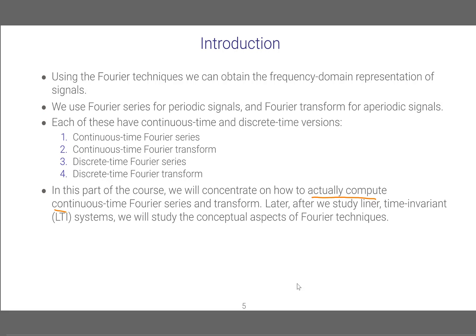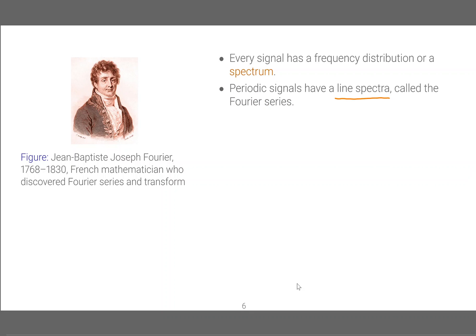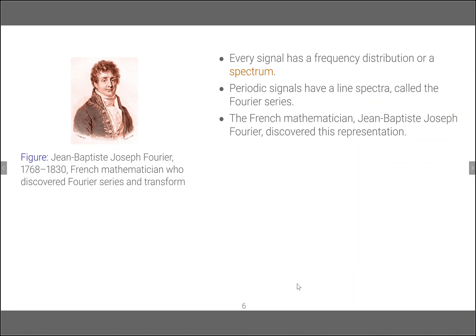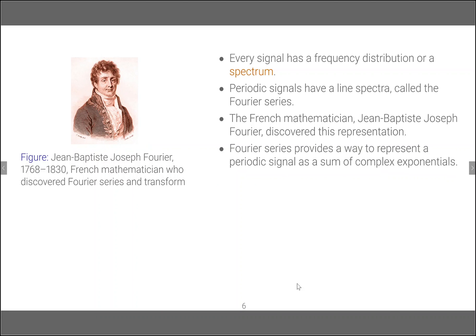We will study how to compute the continuous time Fourier series of a given signal and understand its properties, but after we study linear time invariant systems we will study the conceptual aspects of Fourier techniques. Every signal has a frequency distribution or a spectrum. Periodic signals have a line spectra called the Fourier series. French mathematician J.B.J. Fourier discovered this representation. Fourier series provides a way to represent a periodic signal as a sum of complex exponentials.